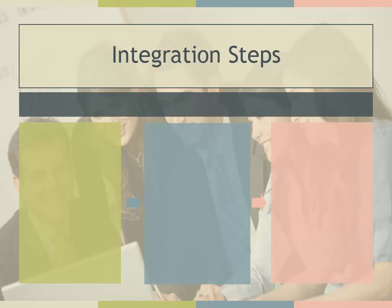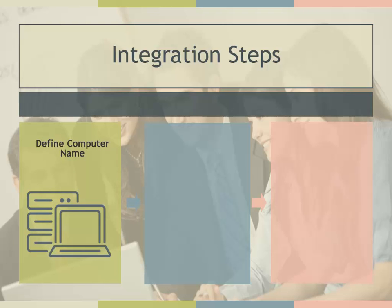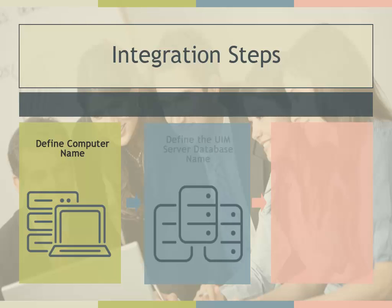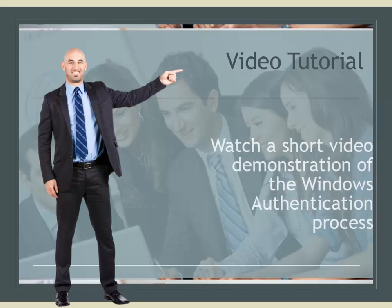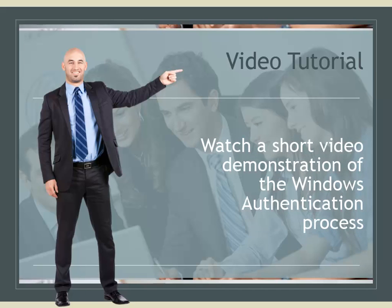There are three steps in the integration process. First, define the computer name where the UIM database is installed. Second, define the UIM server database name on the database server. And third, define the port used to connect to the database. Next, watch a short video demonstration of the process.